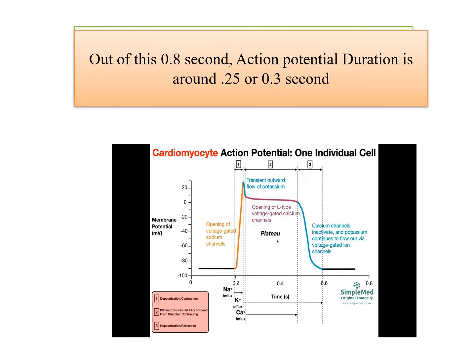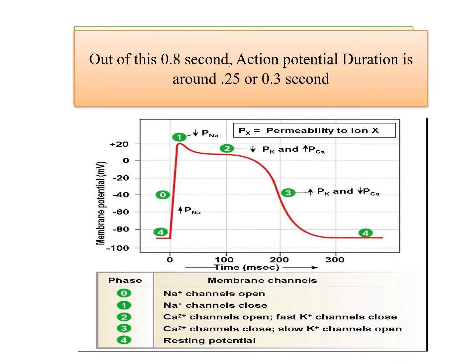Out of this 0.8 seconds, the action potential duration is around 0.25 or 0.3 seconds, as we have seen already. So this 300 millisecond or 0.3 second duration of action potential means it is a prolonged action potential.